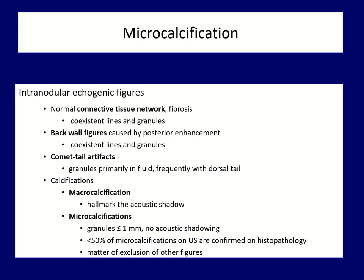Comet tail artifacts represent colloid crystals and arise in cystic fluid. However, not infrequently we can see them in solid parts after the removal or spontaneous absorption of the fluid. In typical cases, it has a characteristic dorsal narrowing tail. The size of a comet tail artifact varies, but in most cases it is not larger than one millimeter.